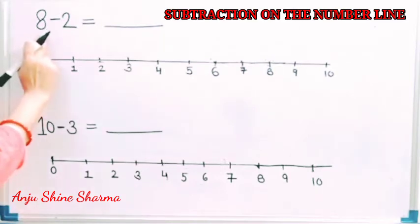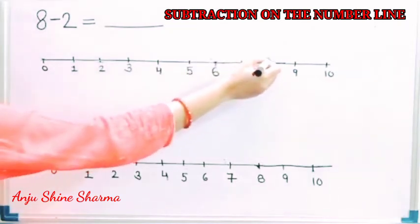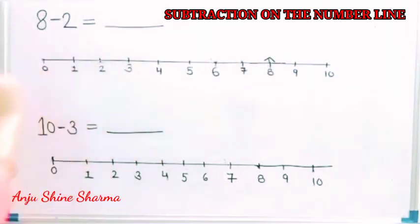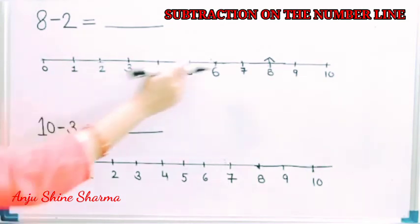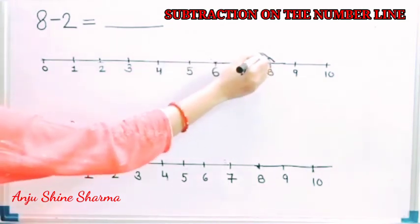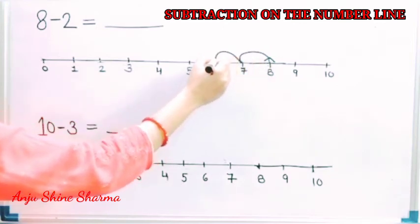First number is 8, so we directly stand at 8 like this. And the second number is 2. So we move back two steps from 8 like this: 1 and 2.